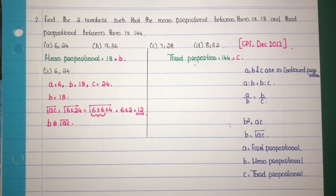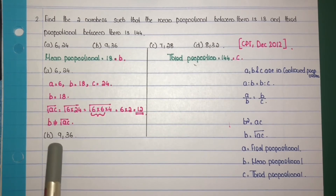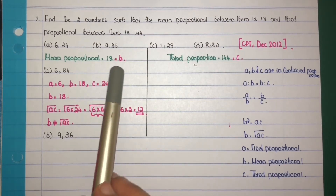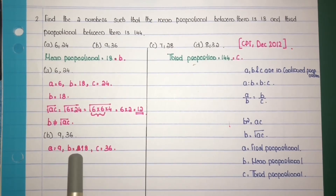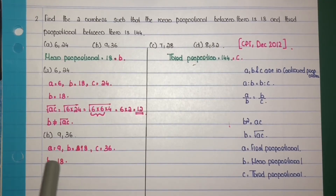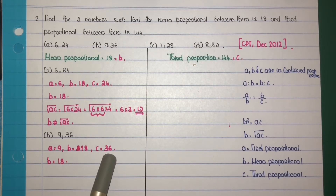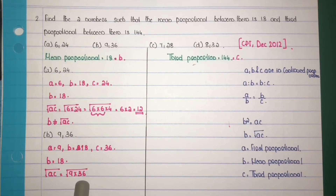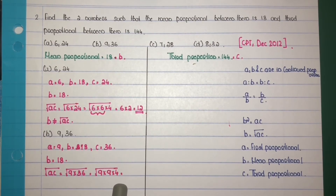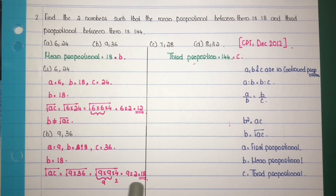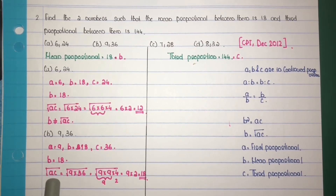For the second option, A equals 9, B equals 18, and C equals 36. Check the first condition: B equals root of AC equals root of 9 times 36. Now 36 is 9 times 4, so root of 9 times 9 times 4 equals root of 81 times 4. Square root of 81 is 9 and square root of 4 is 2, so 9 times 2 equals 18. Therefore B equals root AC — the first condition is satisfied.